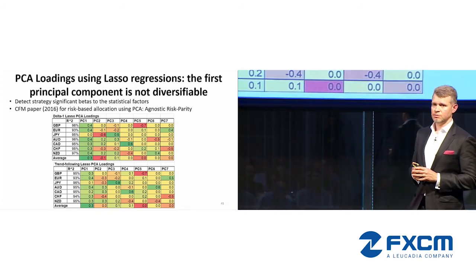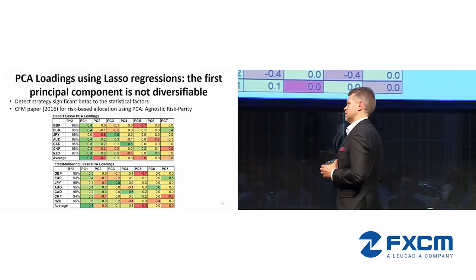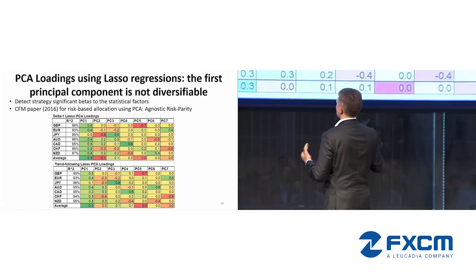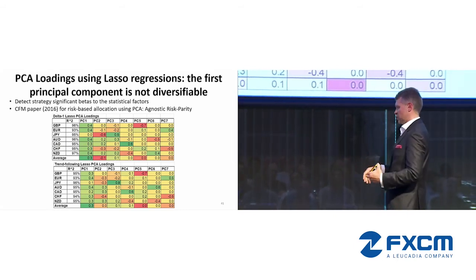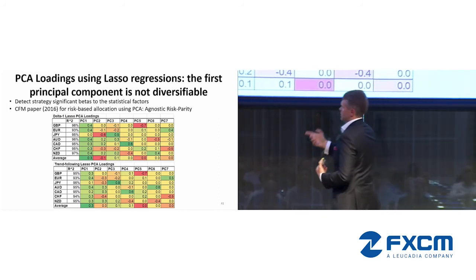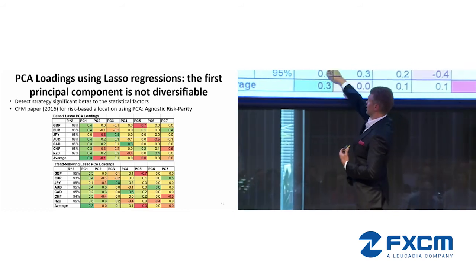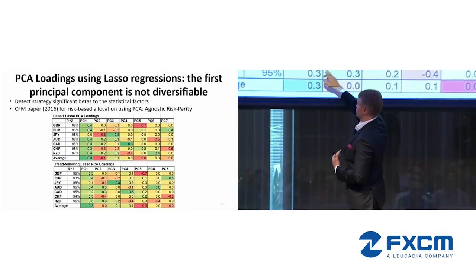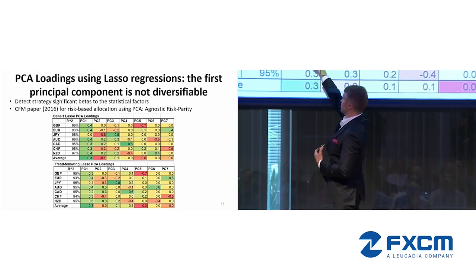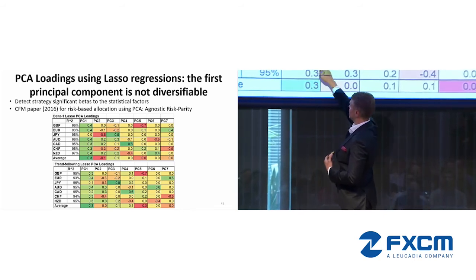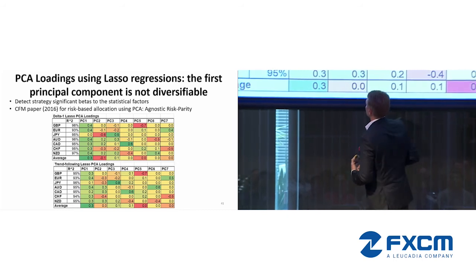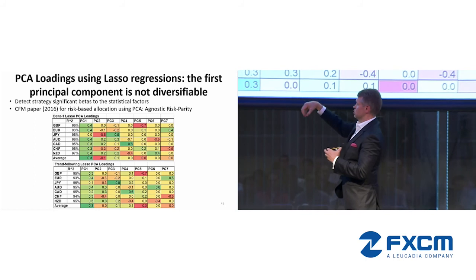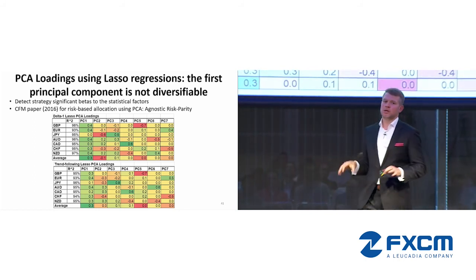Within this PCA framework, we allocate to the first component with equal risk contribution. Within each bucket, currencies with higher exposure to the principal components should be reduced. In this way, we achieve diversification across principal components. The reason this approach works is that principal components tend to be more stable over time than the raw correlations, though this is a very research-intensive area.